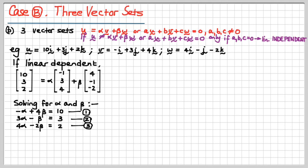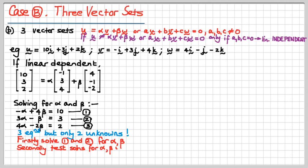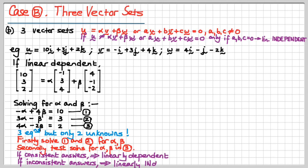But you'll see that we have three equations and two unknowns. So there's too much information. We only need two equations with two unknowns. So what you do to solve it is you firstly solve two of them for alpha and beta, and then secondly you test that solution for alpha and beta in the other equation. If they are linearly dependent, you'll get consistent answers. If they're linearly independent, you will not get consistent answers, and therefore they're not linearly dependent. Consistent answers, yes, linearly dependent. Inconsistent answers, no, they are independent.